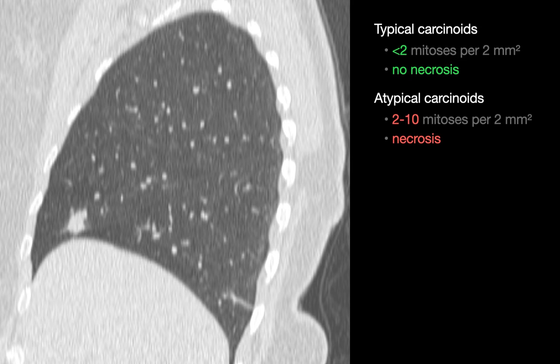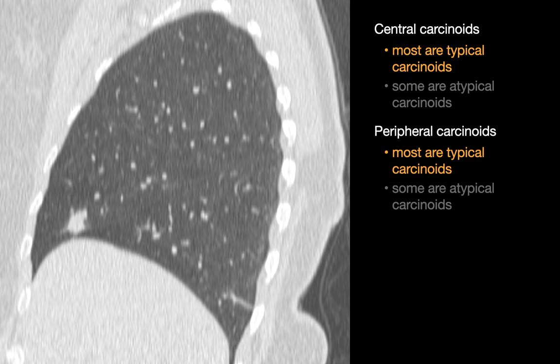Typical and atypical carcinoids can be distinguished histopathologically by the number of mitoses per 2-square-millimeter field and the presence or absence of necrosis. Another way carcinoids are classified is according to their location in the lung: central versus peripheral. Most central and most peripheral carcinoids are typical carcinoids. Atypical carcinoids can present both centrally and peripherally, though they tend to occur slightly more often as peripheral lesions.